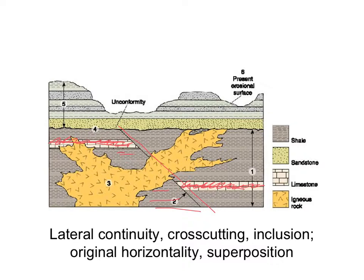This intrusion of volcanic material into the bedrock — did it occur before or after the earthquake? It would have had to happen after. Picture the diagram without that intrusion, just the offset layers from the earthquake — that was an earlier stage. Later, volcanic material came up through the break, and because it's intruding across that fault, you can tell it had to have happened after the earthquake.